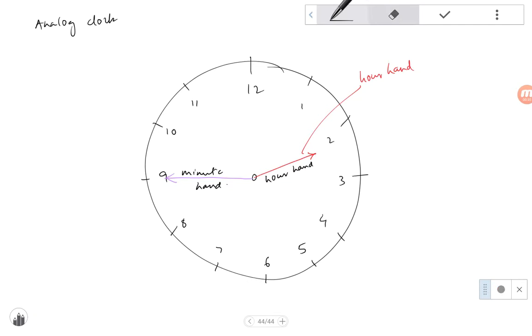The hour hand is in between two and three and the minute hand is pointing at nine. So what does this nine signify? What is the significance of nine? When we say that the minute hand is pointing towards nine, how many minutes is that?